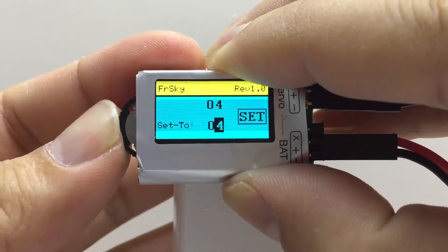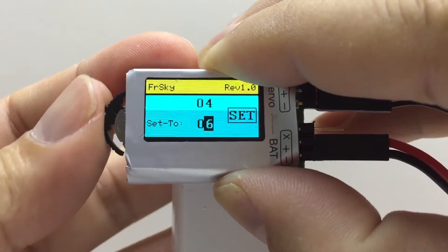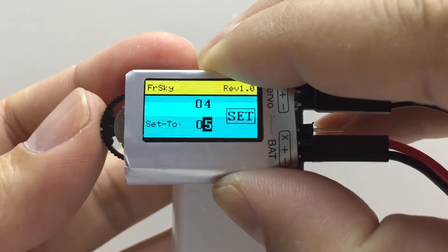Press the wheel. The digit on the right is now highlighted. Turn the wheel up or down to change the number.